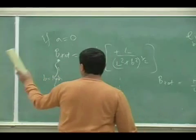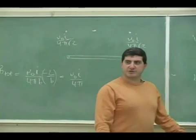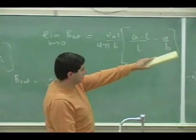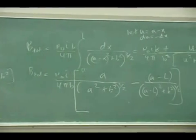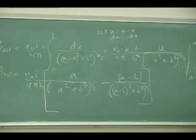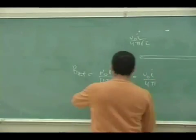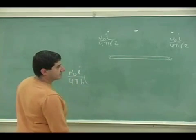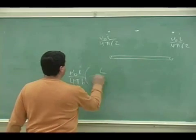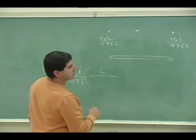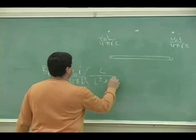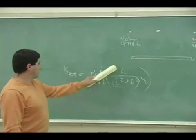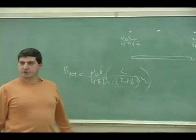Now I put A is equal to L, and I should get the same answer if I did it right. You put it in there: L, second one cancels, L, L squared plus B squared — good. I love it. Everything checks out.